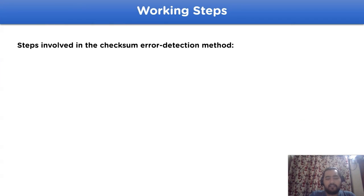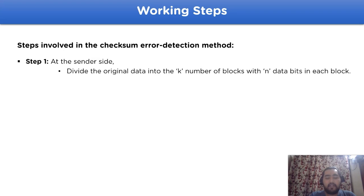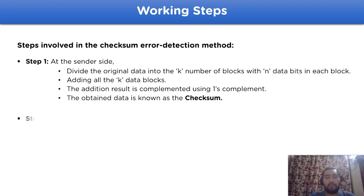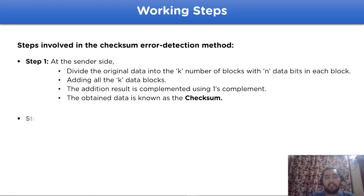There are various steps involved in the checksum method. In step one, at the sender side, we divide the original data into k parts of n bits each. We then add all the k blocks obtained, and the addition result is complemented using one's complement. The data now obtained is known as the checksum value.